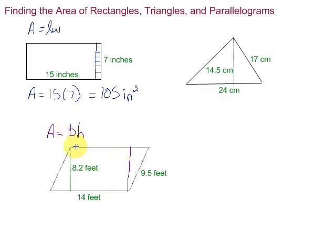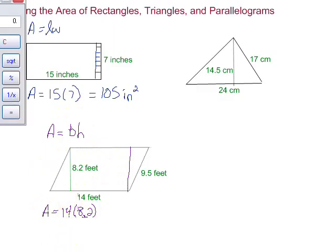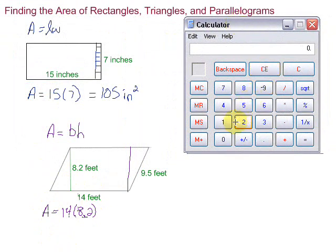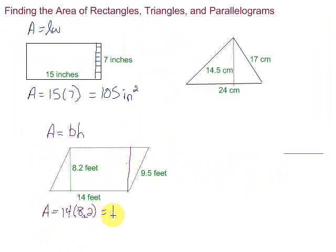So, that's where we get the formula for the parallelogram. Put those numbers in. We have the area, A, equals the base, which is 14, times the height, which is 8.2. Multiply those two. Grab our calculator. We have 14 times 8.2, which gives us 114.8.